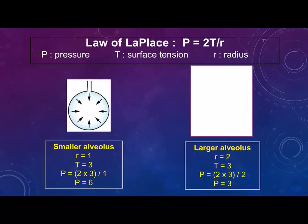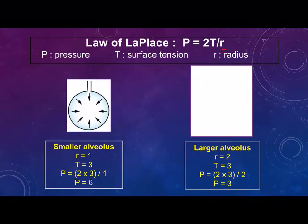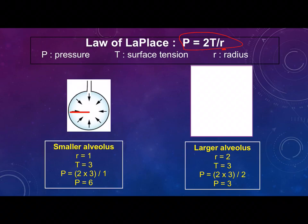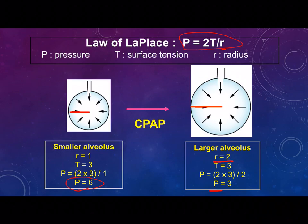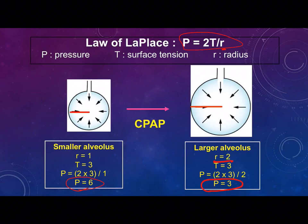Referring to physics, we have Laplace's law: the pressure in a sphere like the alveoli equals twice the surface tension divided by the radius. In a smaller alveolus, the radius is small, so if surface tension is 3, the pressure will be 6 divided by 1 — very high. Increasing the radius with the same surface tension halves the pressure, so only easy pressure is needed to push gas through the alveoli.